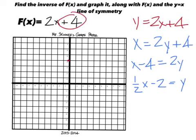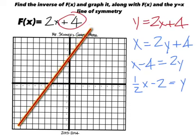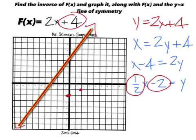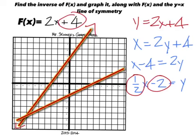Graph the original and inverse functions. The original has a y-intercept of four, and the slope is two — go up two to the right one. For the inverse, the y-intercept is negative two — make a dot down there. The slope is one-half, so go up one to the right two. Then add the line of symmetry in blue.